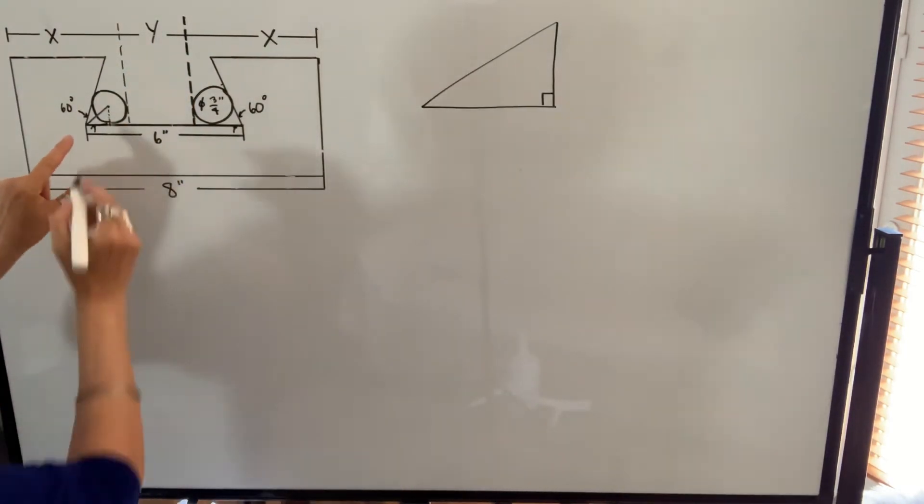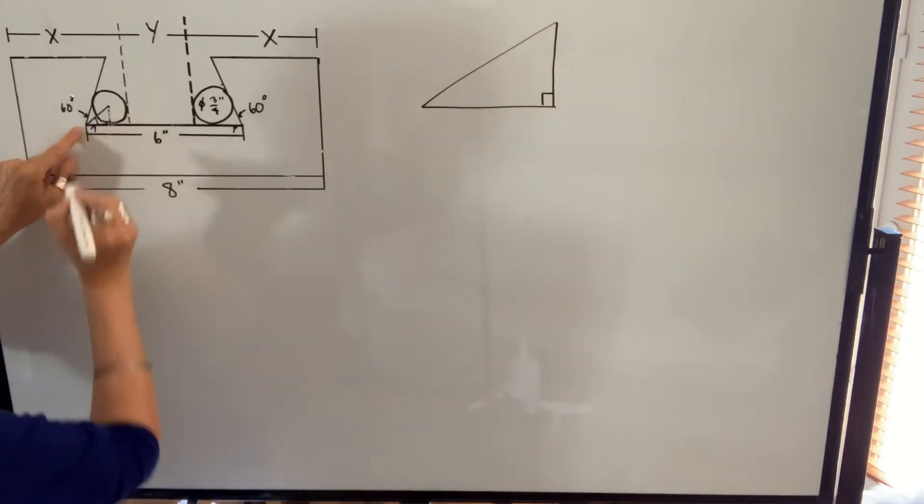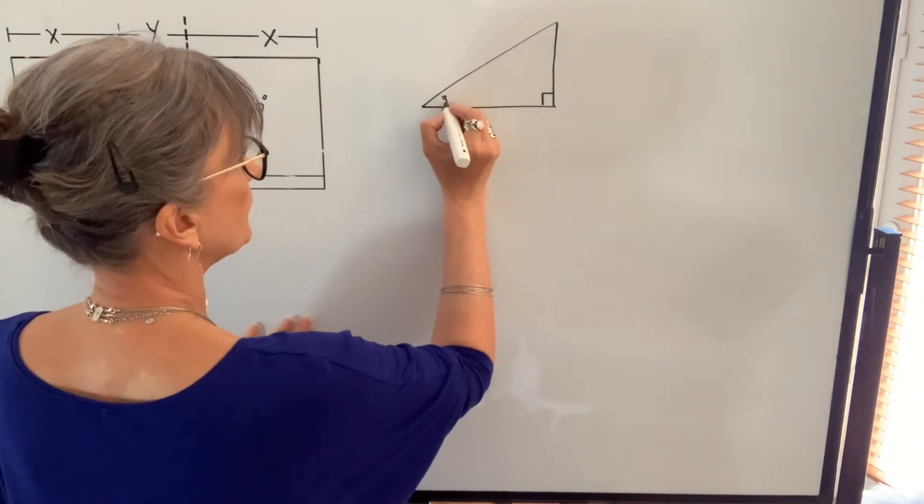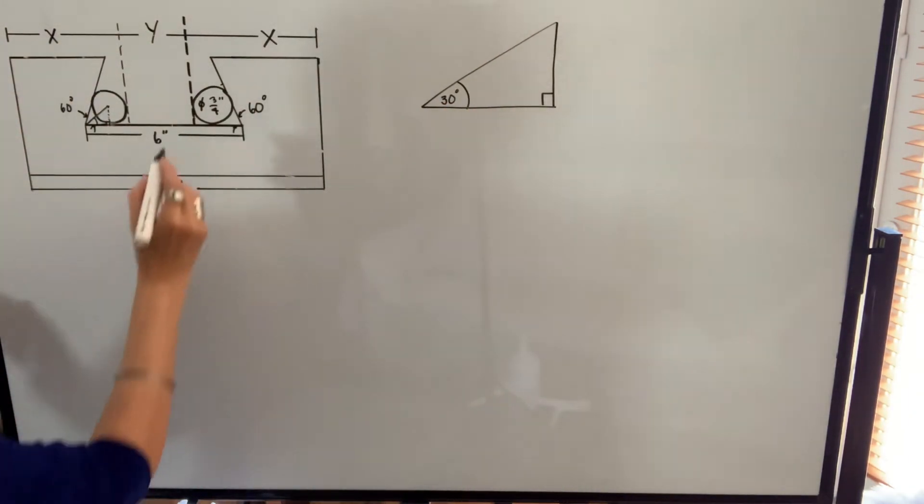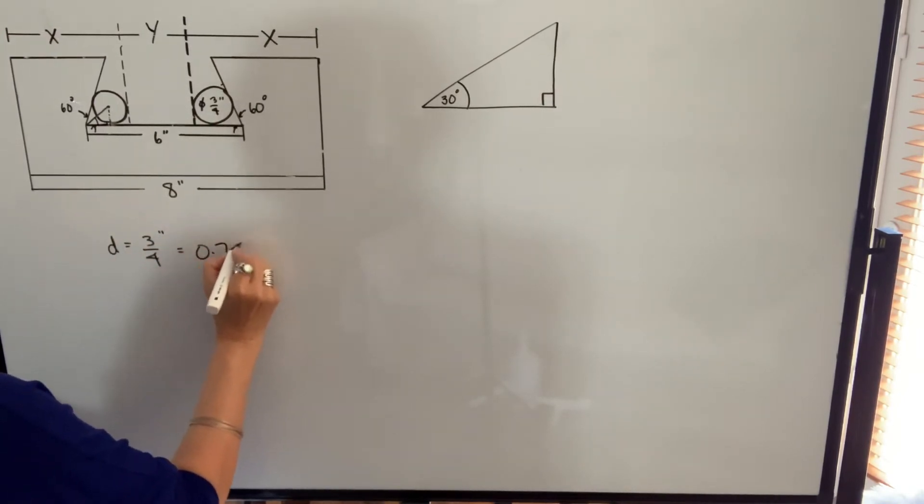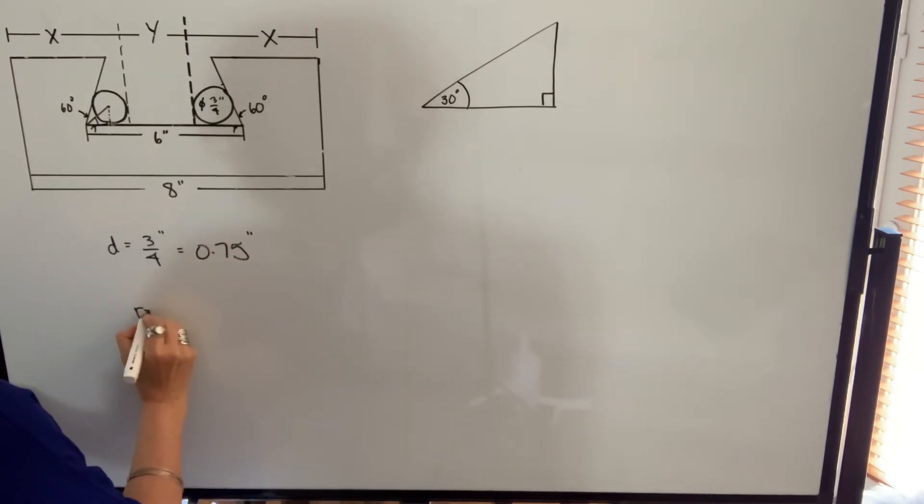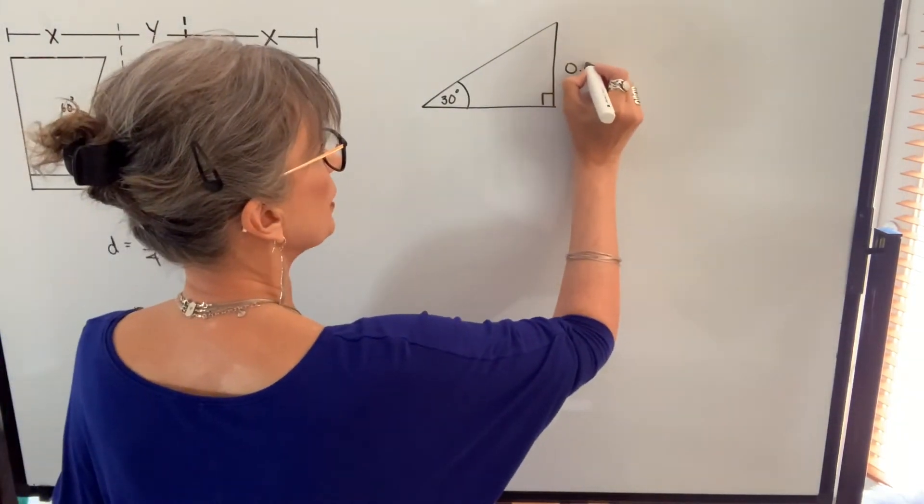So if I redraw that right triangle here, I know that this angle will be 30 degrees, it will be half of 60 degrees. I know this distance is going to be the radius. If the diameter is equal to three quarters of an inch, the radius will be half of that. So the radius will be 0.375 inches. So I know this dimension.